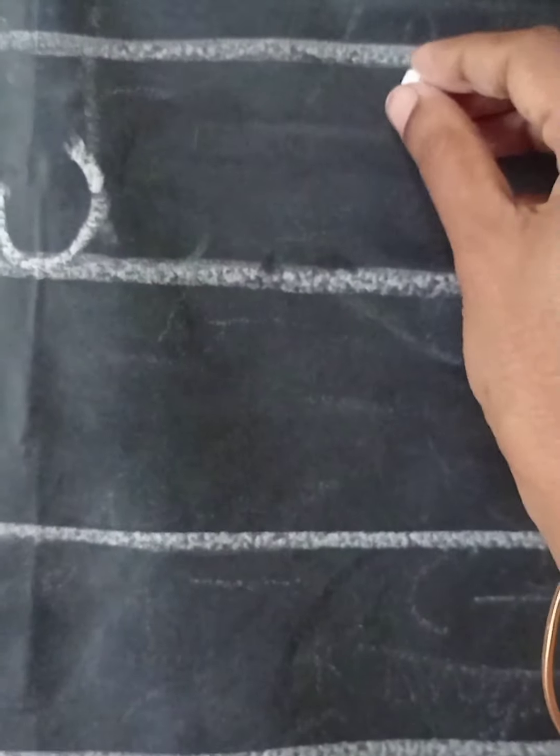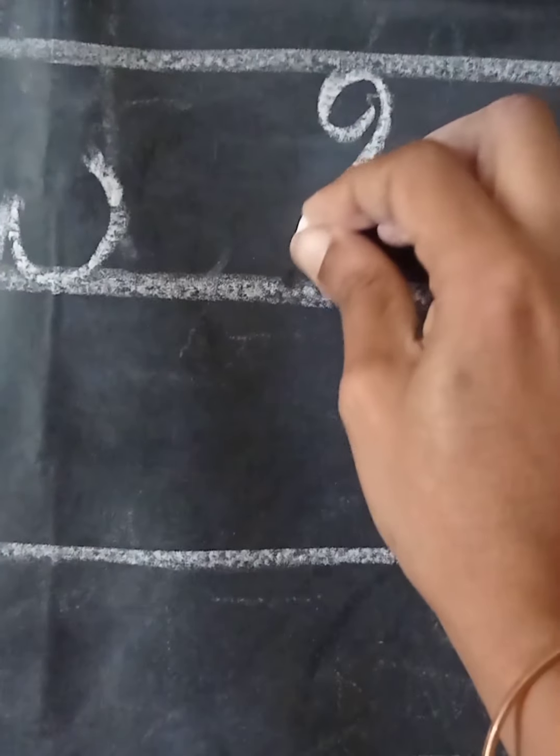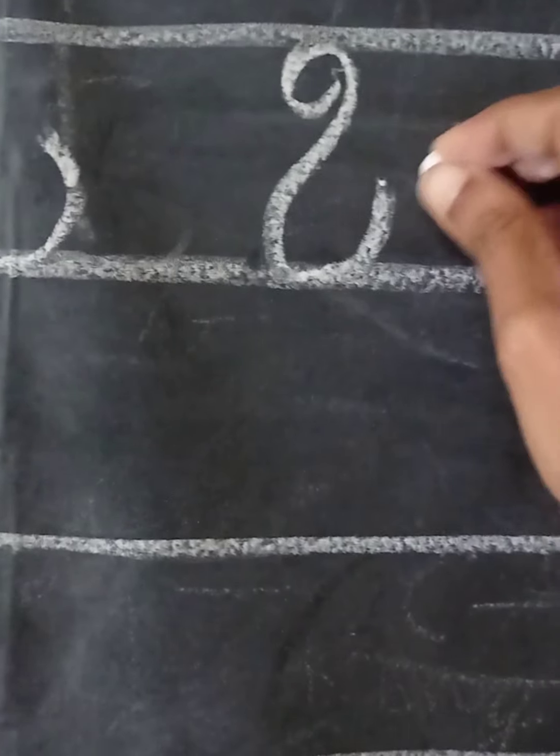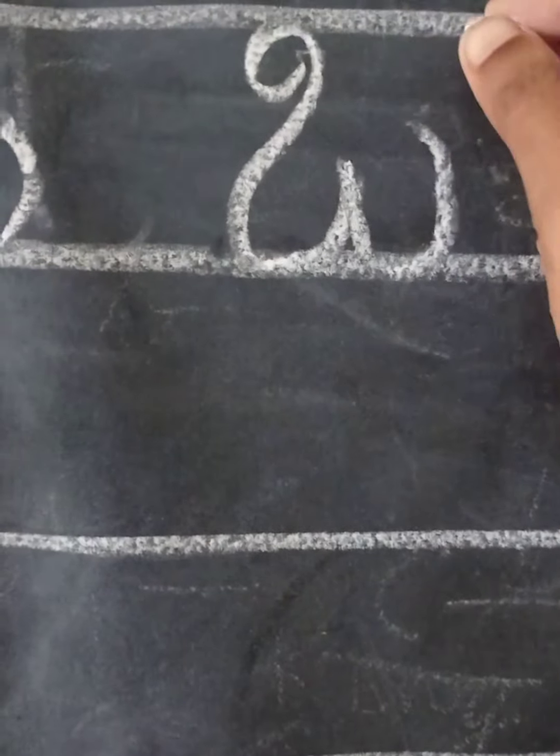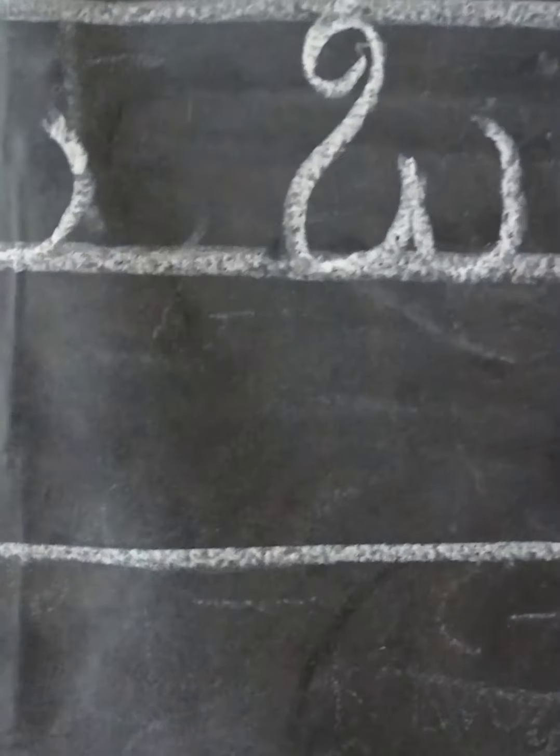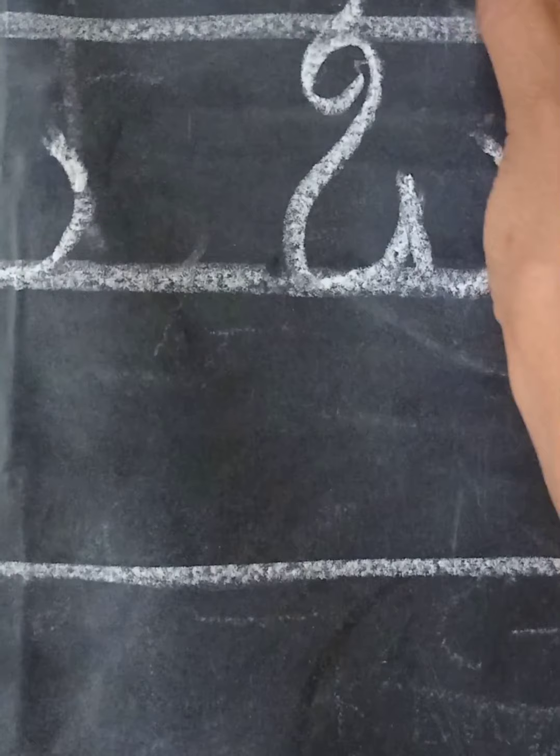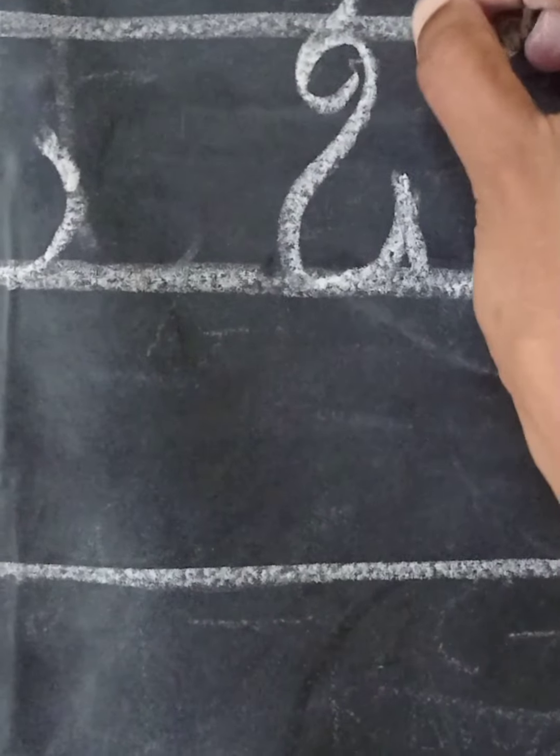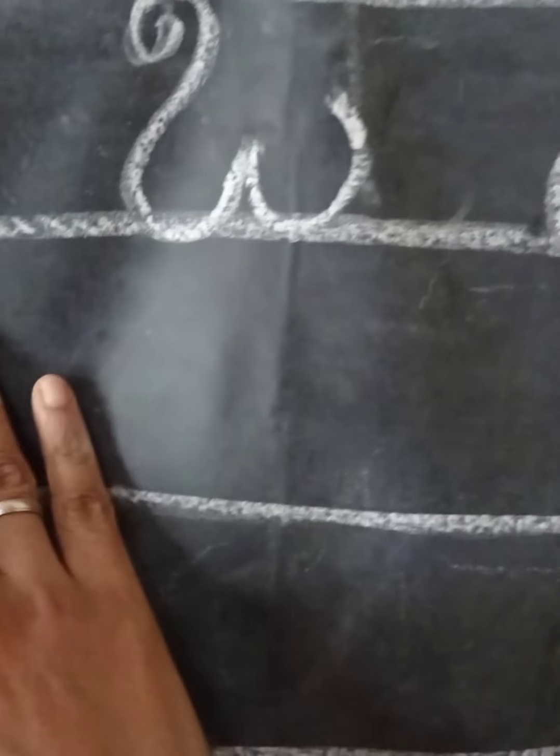The next letter is Ow. Ow as in Aushada. Aushada meaning medicine. So these three letters are very similar to each other with little differences: O, O, and Ow.